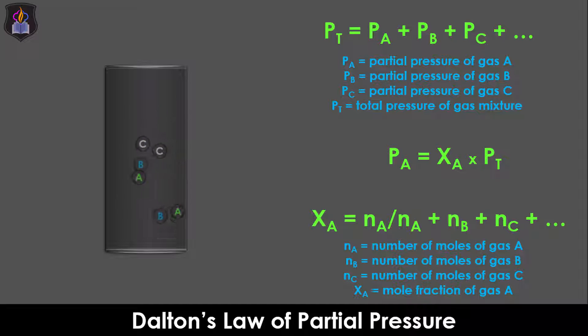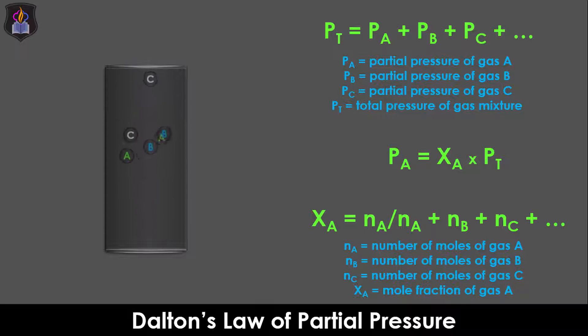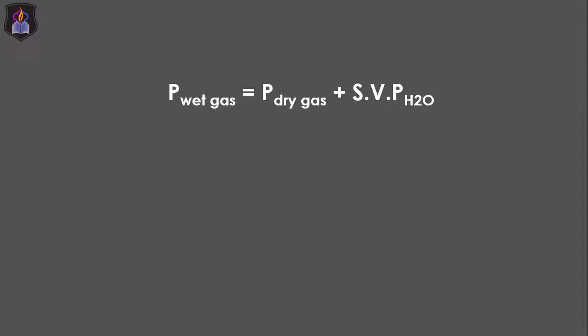A common application of Dalton's Law of Partial Pressure is in the collection of gases over water at certain temperatures. The pressure exerted by the collected gas is the total pressure, or pressure of the wet gas, which is the sum of the pressure of the dry gas and the saturated vapor pressure of water at that temperature. Therefore, if we are to use the pressure of the collected gas in any calculation, we must only use the pressure of the dry gas by deducting the saturated vapor pressure of water from the pressure of the wet gas.